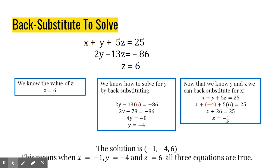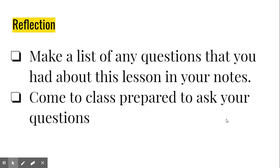That means that our solution is this ordered triple. That's what this is called, an ordered triple. It is negative 1, negative 4, and 6. This means when x, y, and z have these values, all three of the equations in that original system are true.